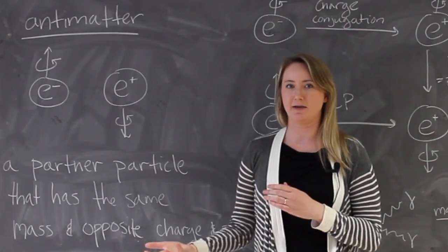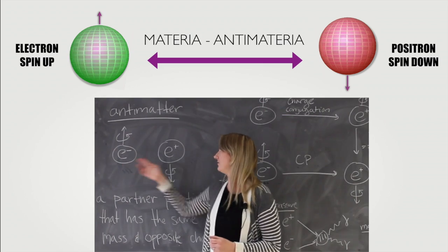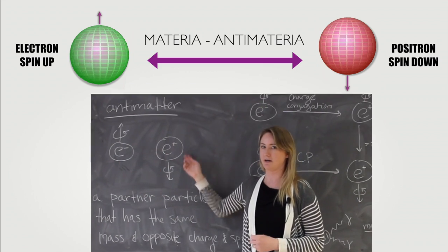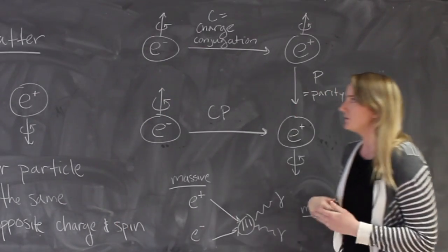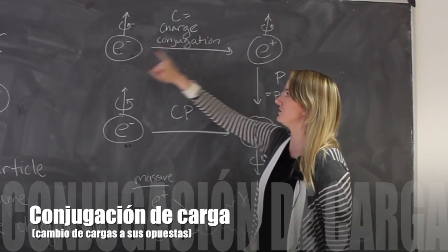This particle has exactly the same mass but opposite charge and spin. Electrons are matter and they have positrons which are antimatter. The way you get from matter to antimatter is first you flip the charge, so you take an electron and turn it into a positron.